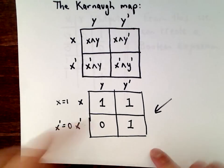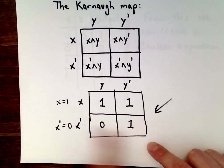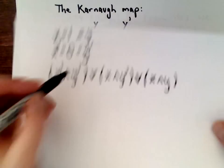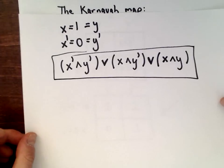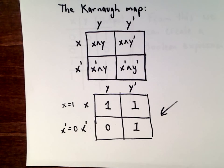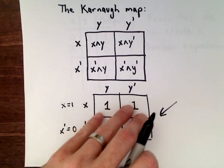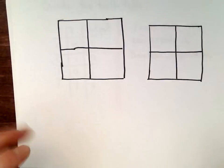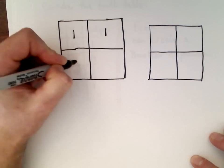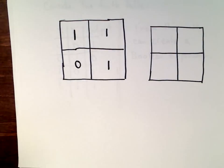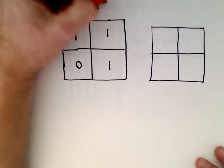Just as we could decode this Karnaugh map back into the boolean expression we had at the beginning, it's easy to interchange between boolean expressions, Karnaugh maps, and truth tables. Now here is the important part — this is the magic: adjacent cells in the Karnaugh map can be simplified using rules of logic.